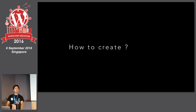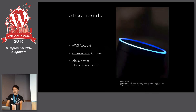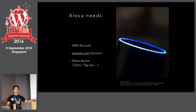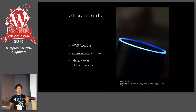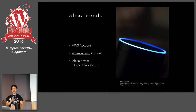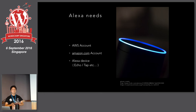Next, how to create an Alexa application. To create an Alexa application, you need three things: first, an AWS account; second, an Amazon.com account; and third, an Alexa device — for example, Amazon Echo, or the smaller Amazon Tap, and more. Of course, you can make your own device using a Raspberry Pi, including the Alexa skill.